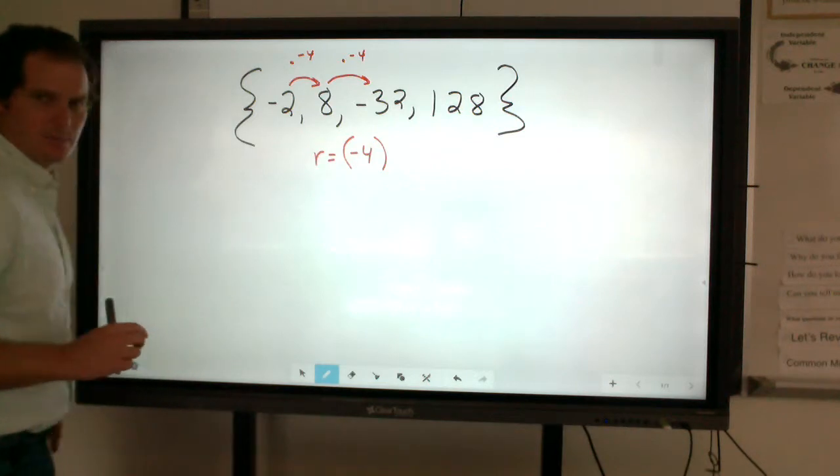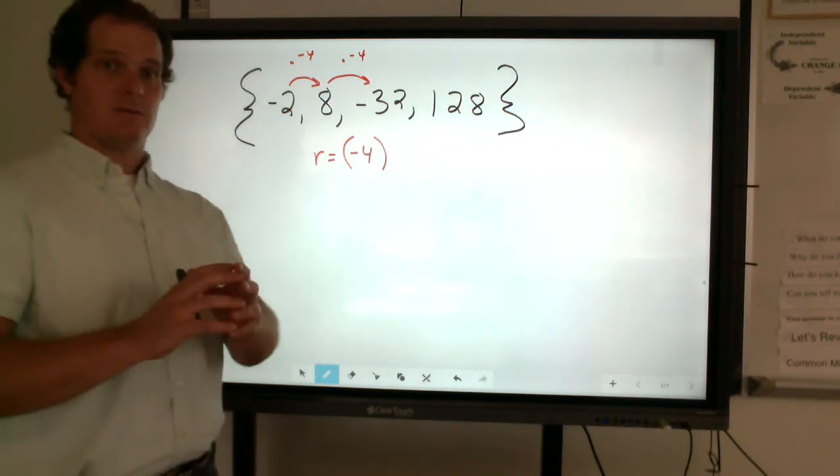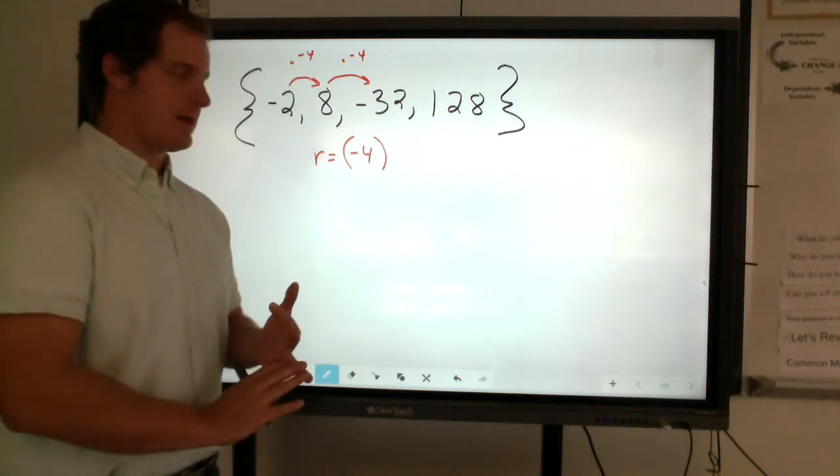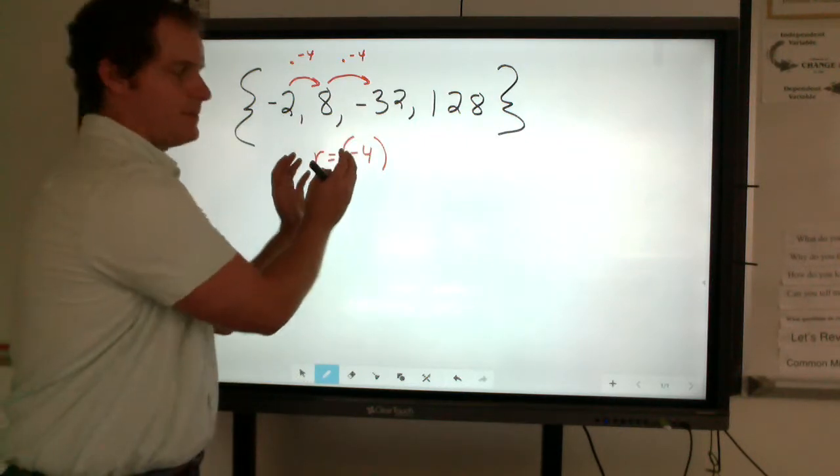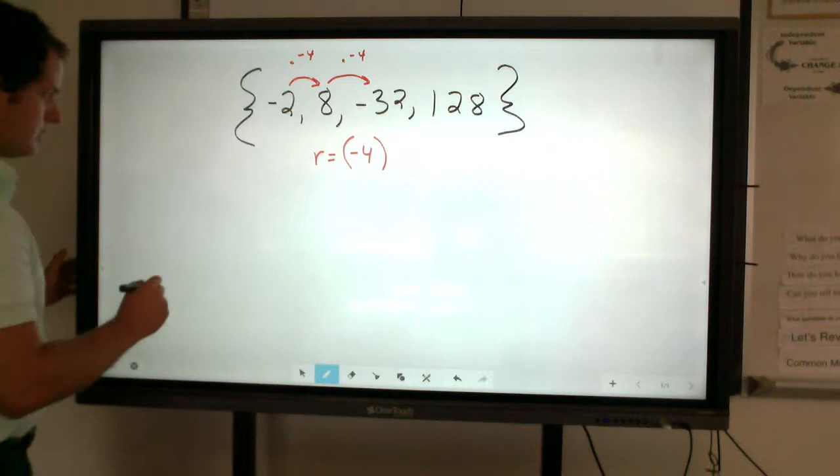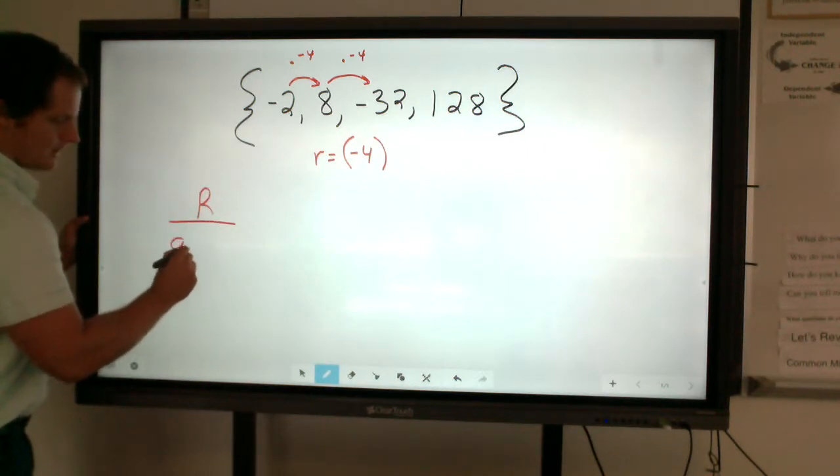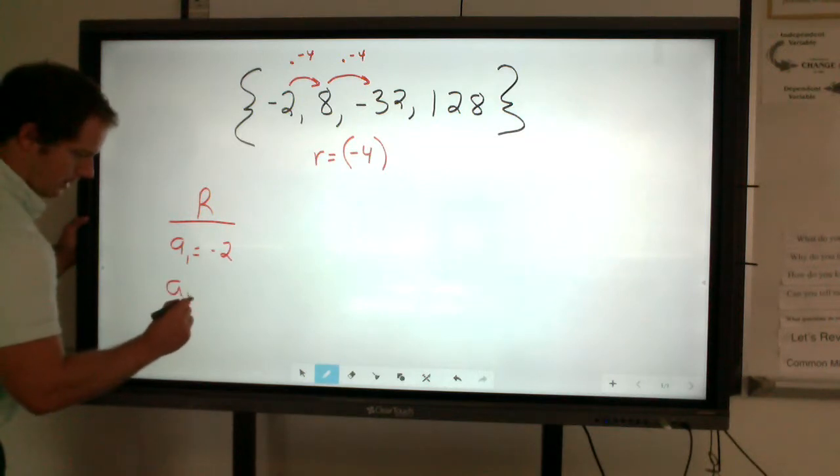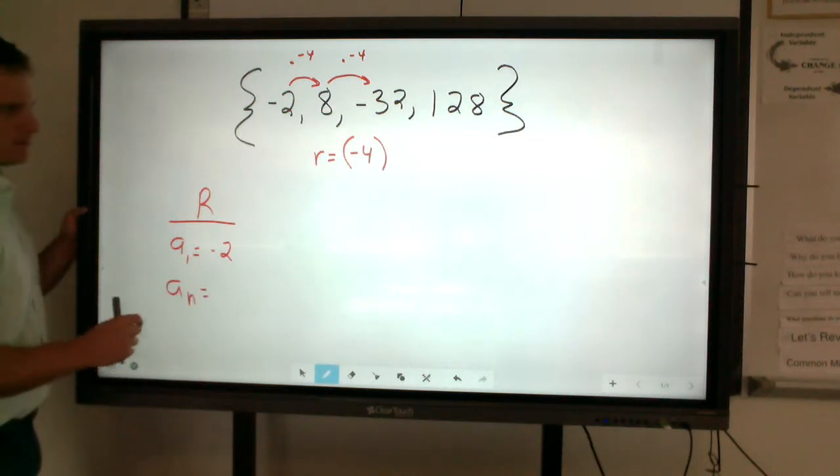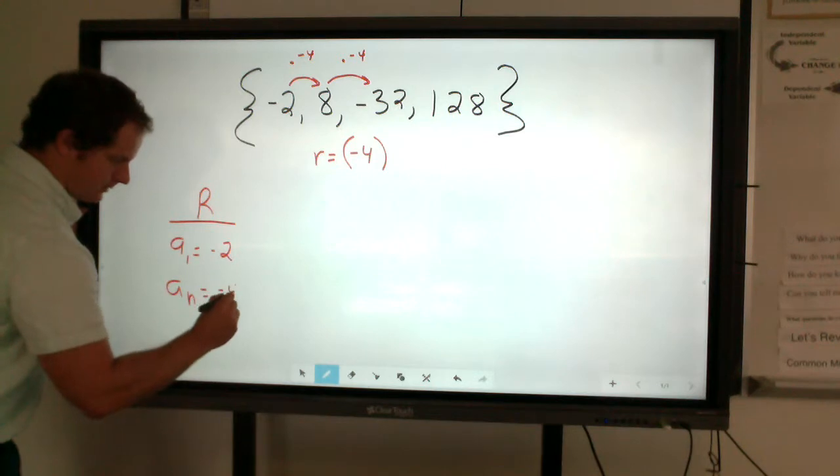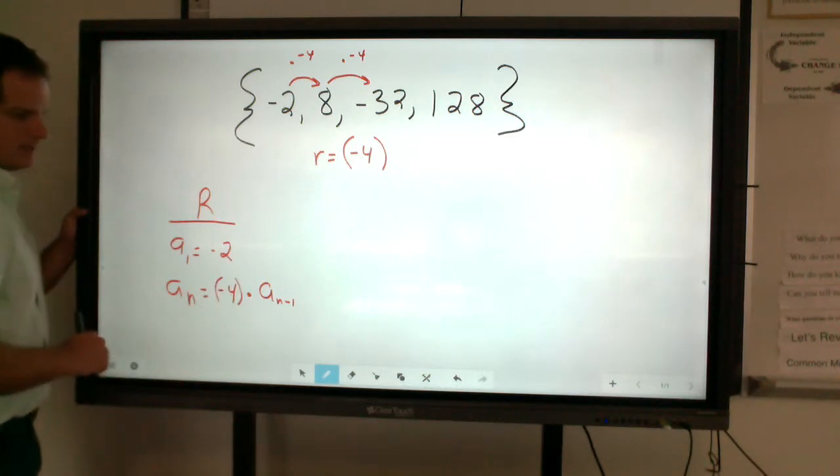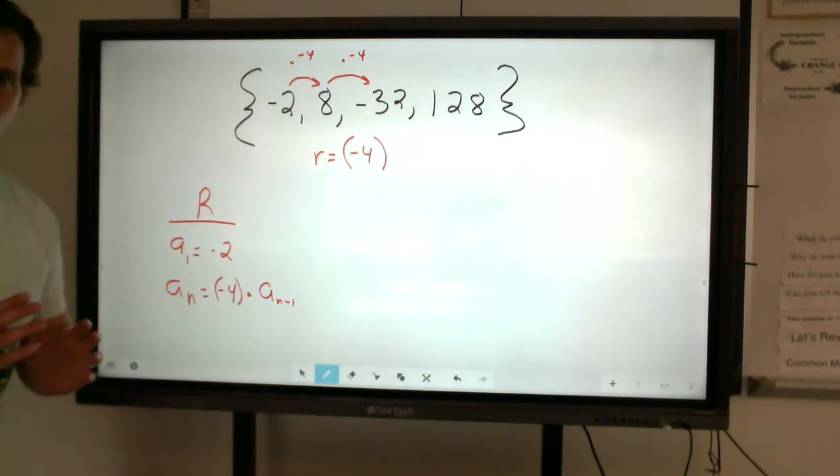And when we talk about common ratio, I like to put that in parentheses, especially when we're talking about whole numbers or negative values. I want to make sure that I encompass what that value is. So for our recursive, establish what that a sub 1 is. In this case, it's negative 2. For our a sub n, I'm going to write it slightly different. I'm going to put that negative 4 out in front and multiply that whole quantity by that previous term. And I'm going to put my negative 4 in parentheses to show that ownership.